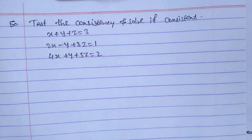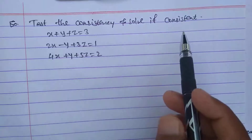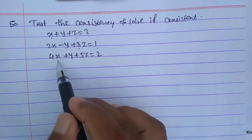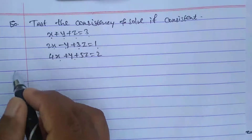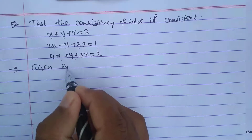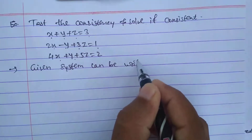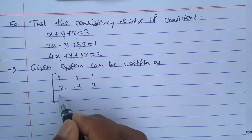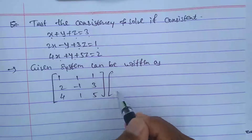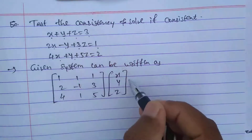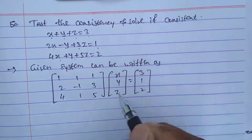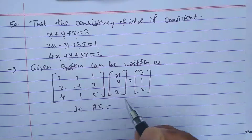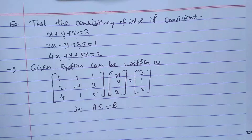Hello, welcome back. Next example: test the consistency and solve if consistent. The system is given as x plus y plus z equals 3, 2x minus y plus 3z equals 1, 4x plus y plus 5z equals 2. This is a non-homogeneous system. The given system can be written as matrix A times matrix of unknowns XYZ equals the right-hand side, that is AX equals B.